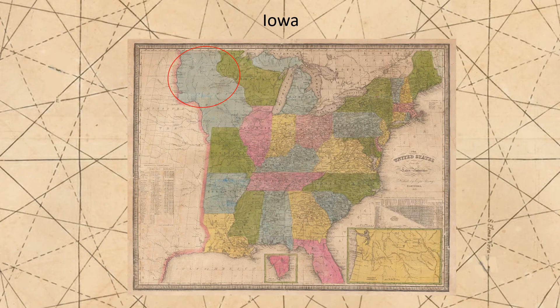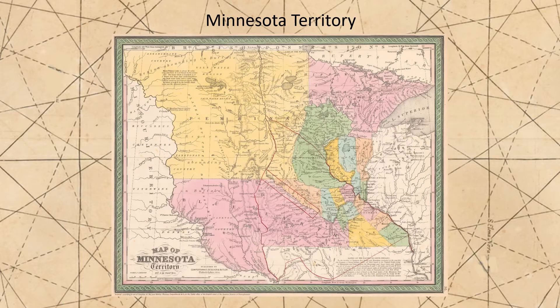The rest of the original Iowa Territory — the lands to the north of the new state between the Mississippi and Missouri rivers — was left unorganized until 1849, when this area, along with a little bit of Wisconsin territory east of the Mississippi, became the Minnesota Territory.